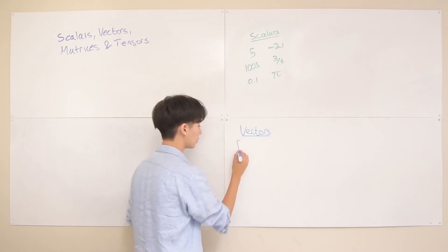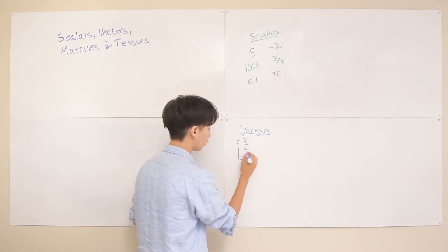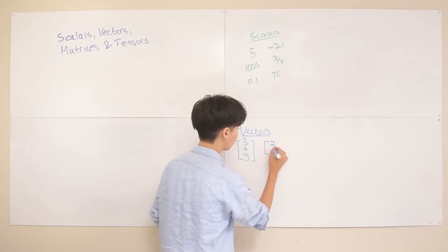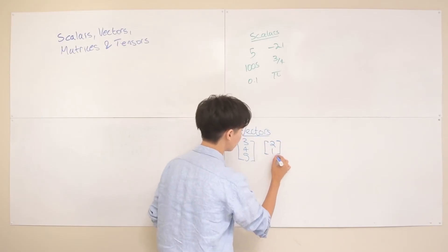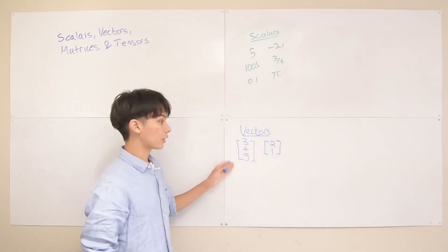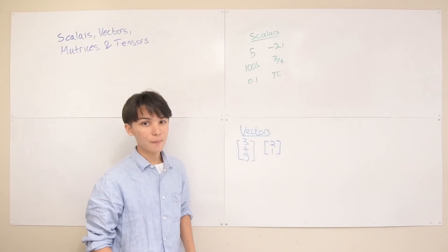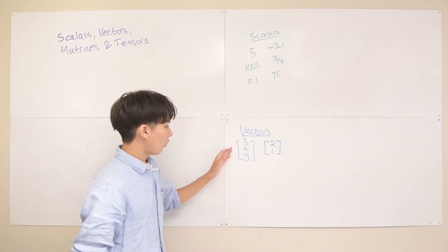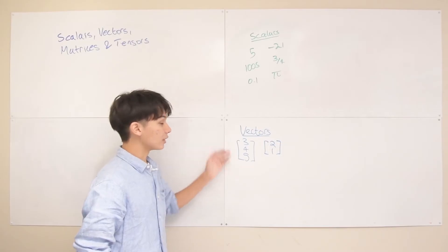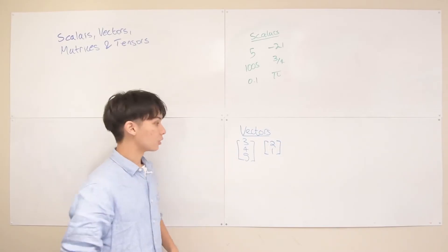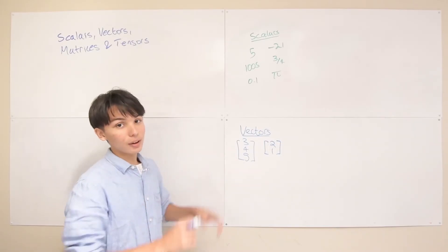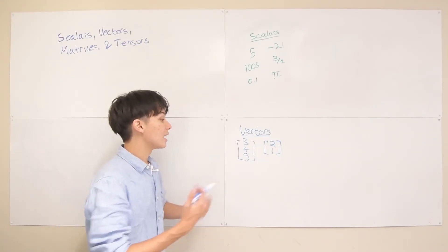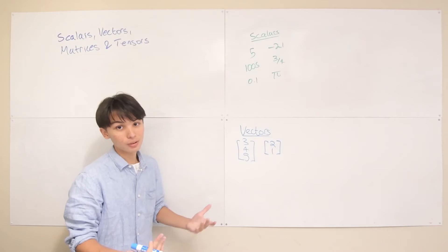Let's give an example: something like [3, 4, 5] is a vector, or [2, 1] is a vector. We call this a three-dimensional vector and this a two-dimensional vector. You can think of an n-dimensional vector as having n elements — just a list of n numbers.